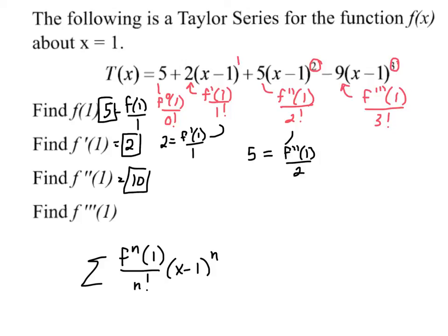And finally, f triple prime, and be careful of this sign here. Notice that it is a negative 9. So that means that f triple prime, negative 9, that coefficient is equal to f triple prime of 1 over 3 factorial, which is 6. So 6 times negative 9 is negative 54, and that's the value of the derivative.